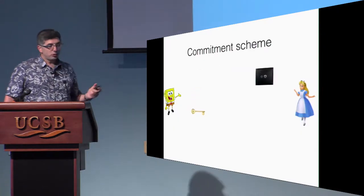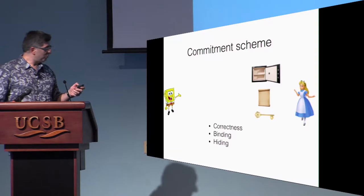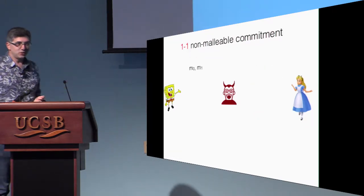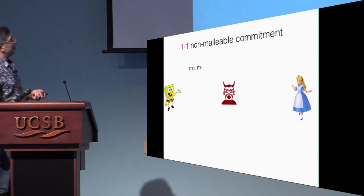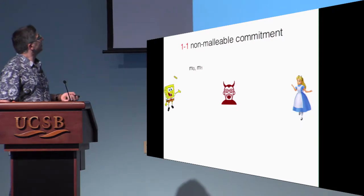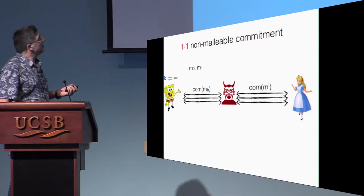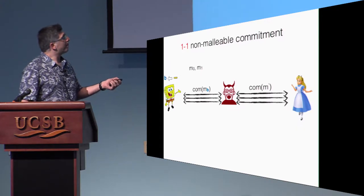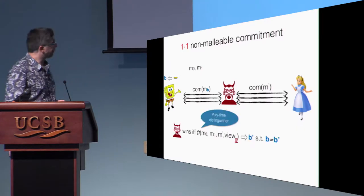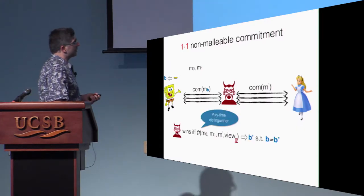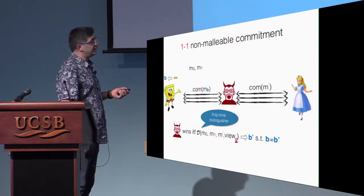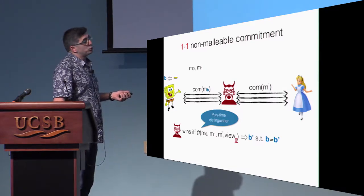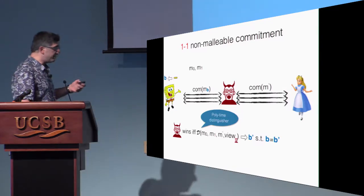You all know what a commitment scheme is. So let's go directly to the non-malleability game. We have an adversary who gets a commitment of either m0 or m1 and tries to compute a commitment of a message m-prime that is related to mb. A distinguisher gets the committed message of the adversary in the clear, along with the view of the conversation, and tries to guess b.